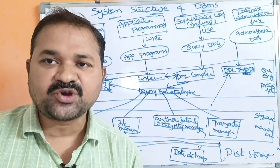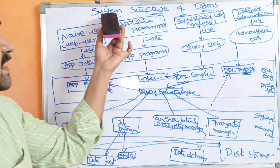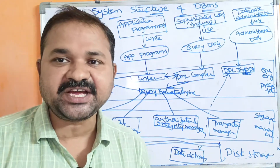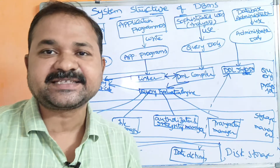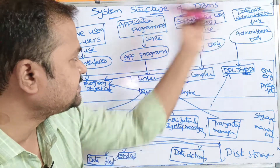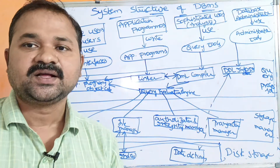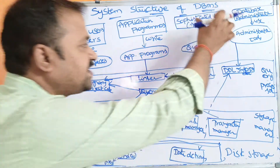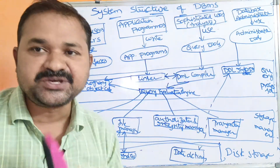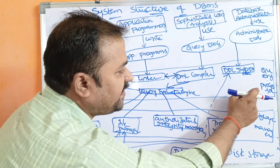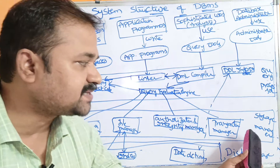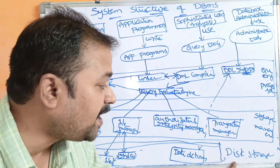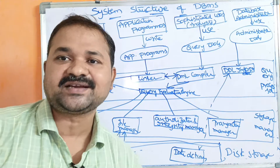In this video, we are going to discuss the system structure of a database management system. Here is the diagram showing the system structure of the DBMS. We can divide this diagram into mainly four parts: the first part specifies database users, the second part specifies query processor, the third part specifies storage processor, and the fourth part specifies disk storage, that is, hard disk.